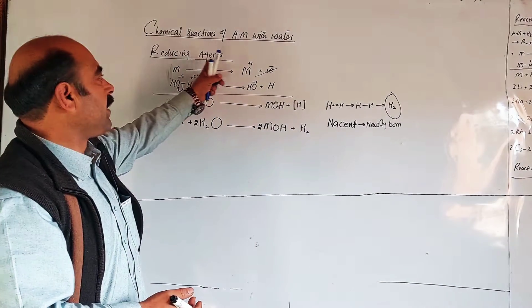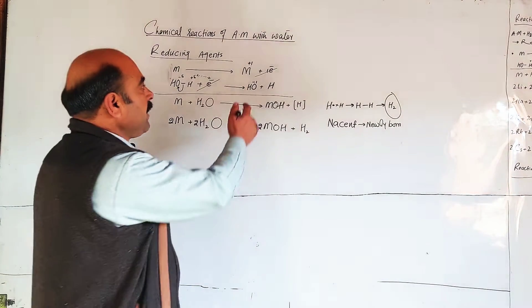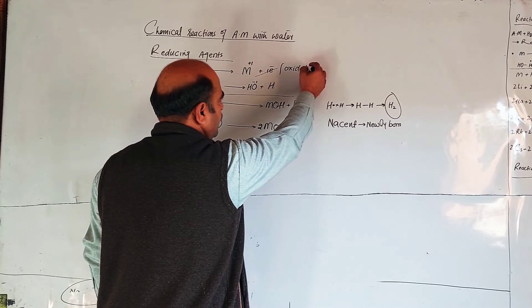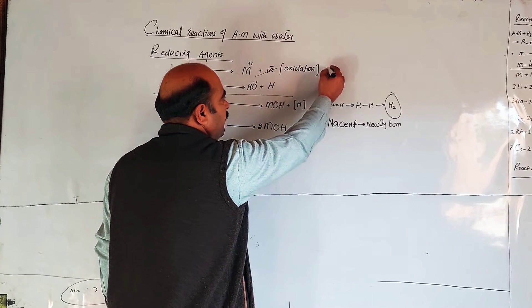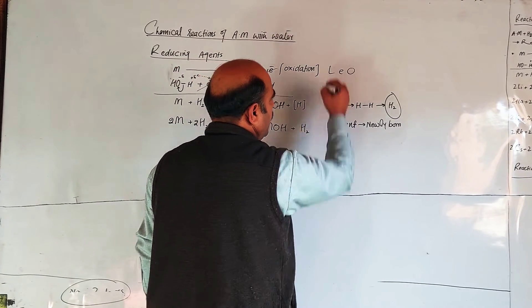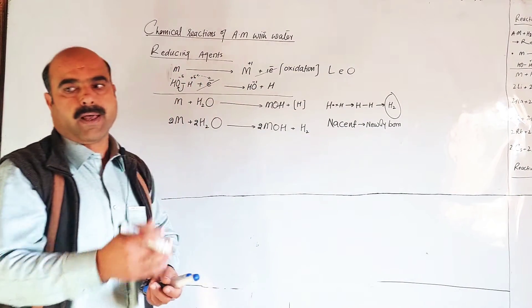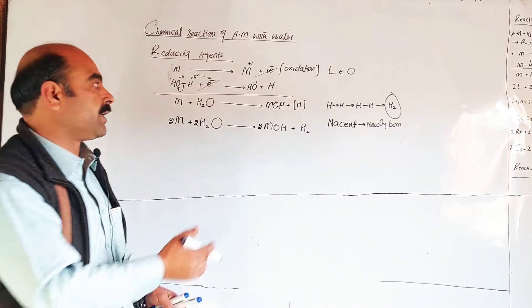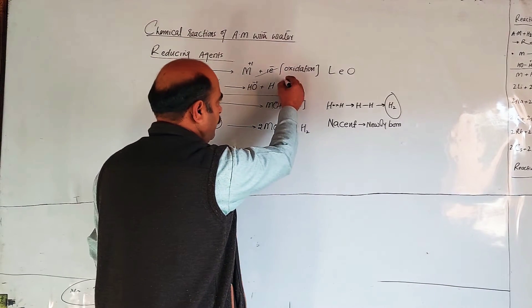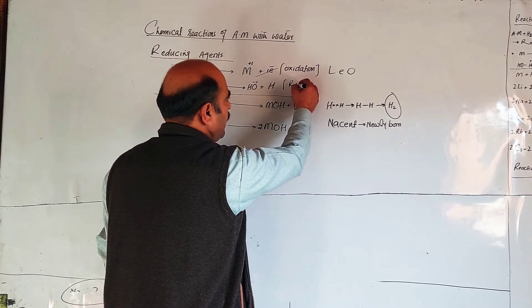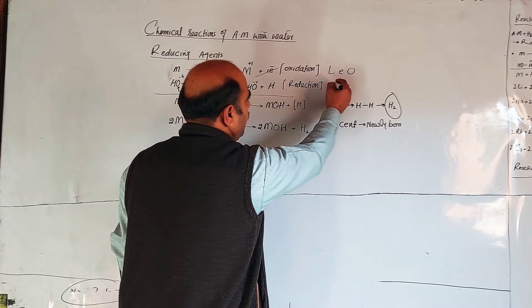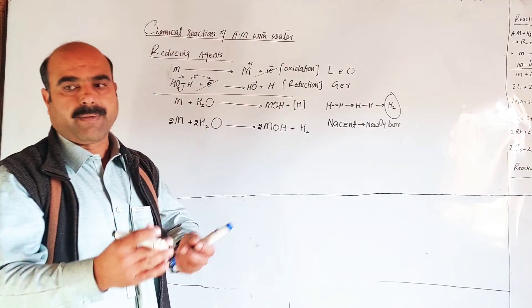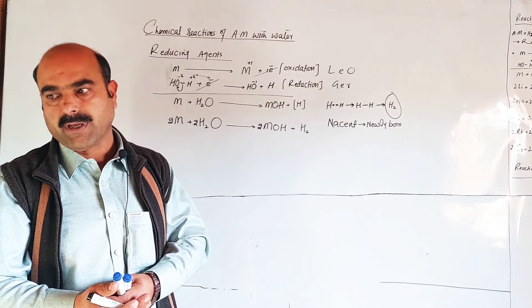Alkali metals are reducing agents because they lose electrons. Loss of electron is called oxidation. LEO means Loss of Electron is Oxidation. Gain of electron is called reduction. GER means Gain of Electron is Reduction.